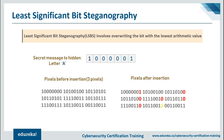To summarize LSB steganography: every pixel can be represented using different color models — in this demo, the RGB color model is used. Each value is represented using 8 bits, and the number of bits determines the color displayed. Changing the most significant bit makes more changes to the final value, but changing the least significant bit does not. LSB steganography makes use of this fact — it replaces the LSBs in the cover object with the binary bits of the secret message, leaving the cover image and stego object visually identical.